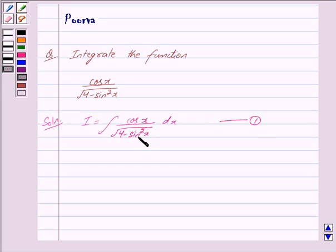Now we put sin x is equal to t. So we have put sin x is equal to t. Now differentiating we get.